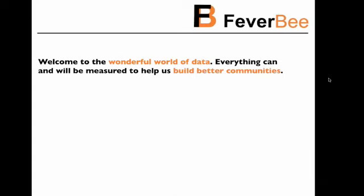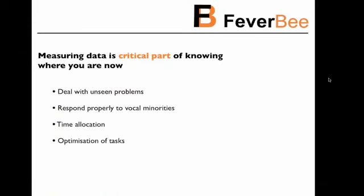What we want to cover today is the wonderful world of data, where everything can be measured to help build better communities. By measuring data we can deal with unseen issues — things we don't know are going wrong. For example, you might track new members joining monthly but not how many are active, and end up with active members becoming less and less active every month while your community heads toward oblivion without you knowing it.